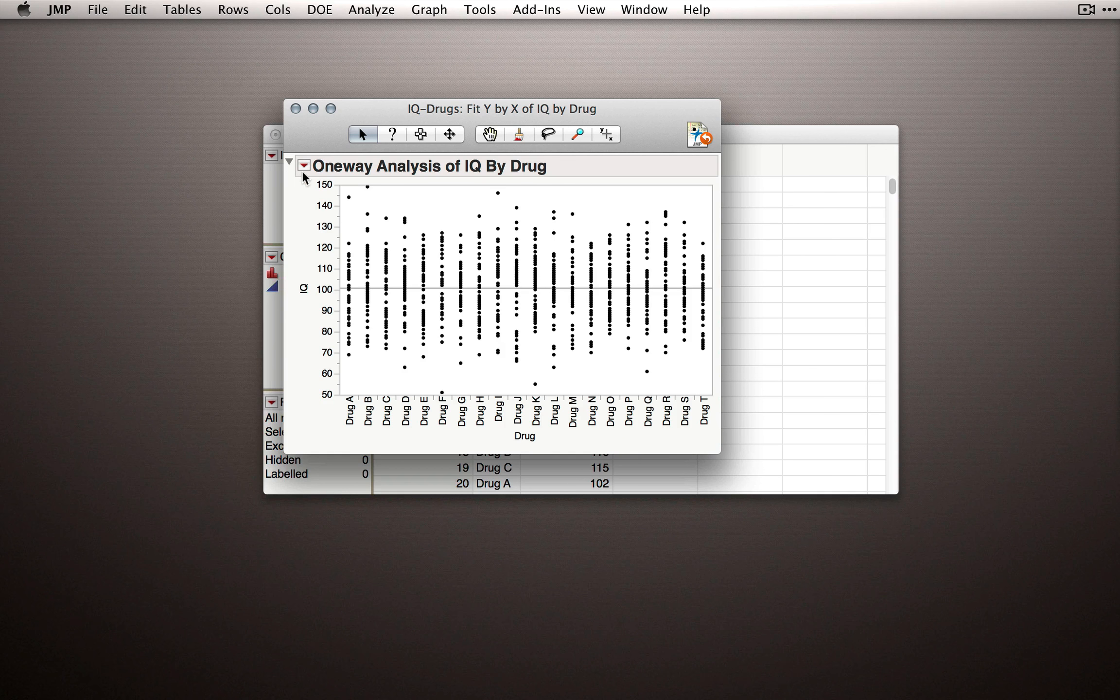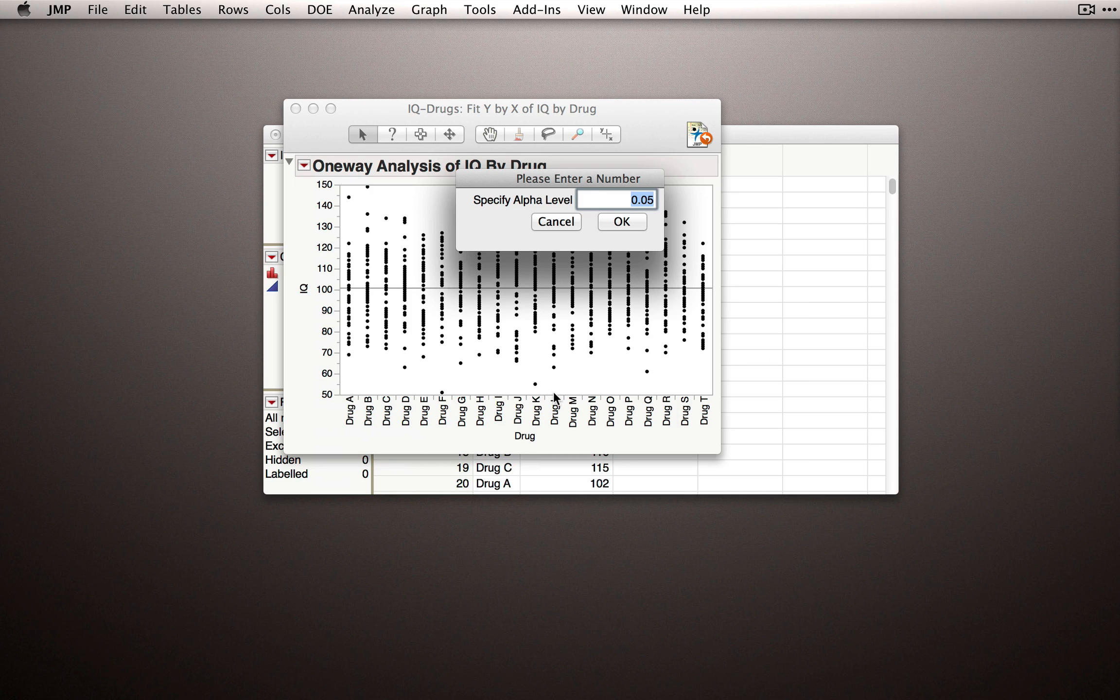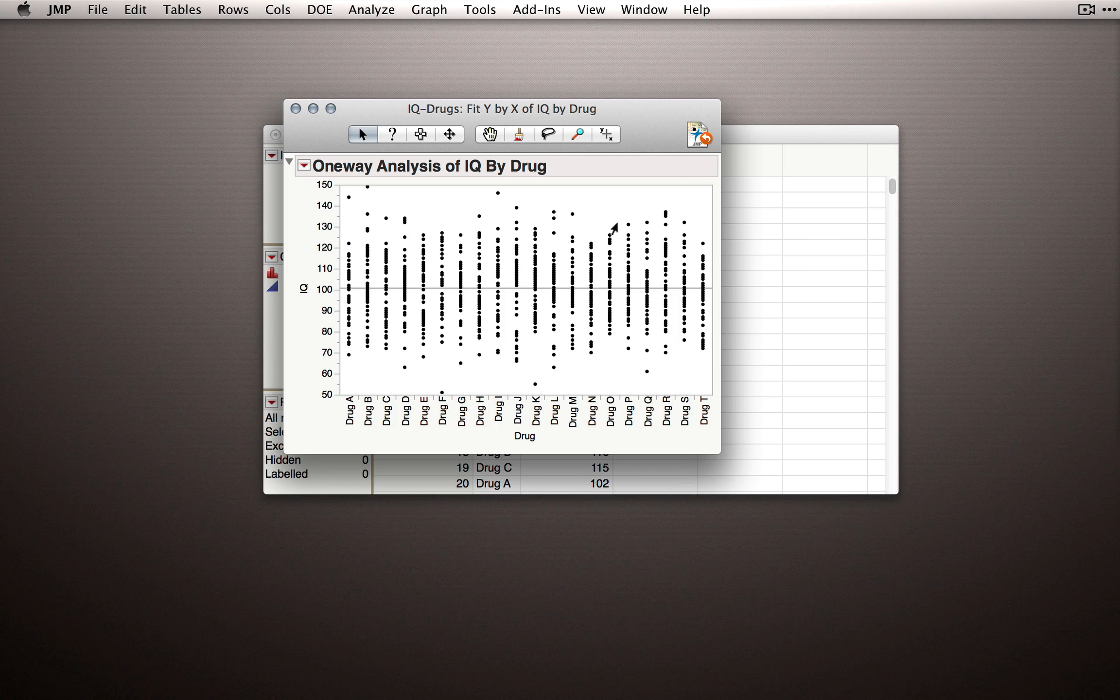Before we run any output, let's go to the red triangle, and under Set Alpha Level, I'm going to select Other. Now let's remember, we want to control our overall alpha rate to be 0.05, but we've specified 5 specific comparisons that we know we're going to be making: A vs. B, C, D, E, and F. So the alpha level for each of these tests will be 0.01, which is just 0.05 divided by 5. When I click OK, Jump will return nothing because it simply changed our alpha level.